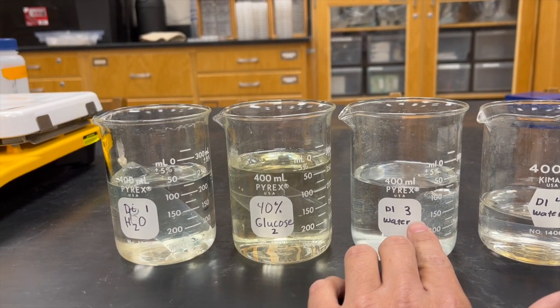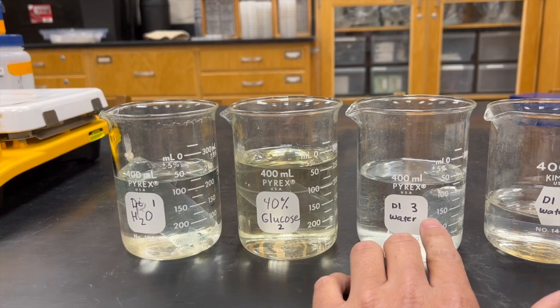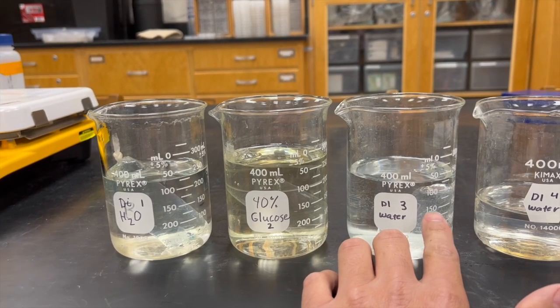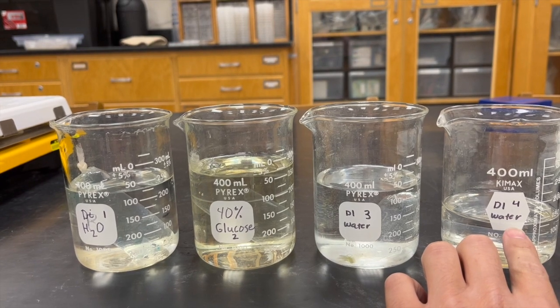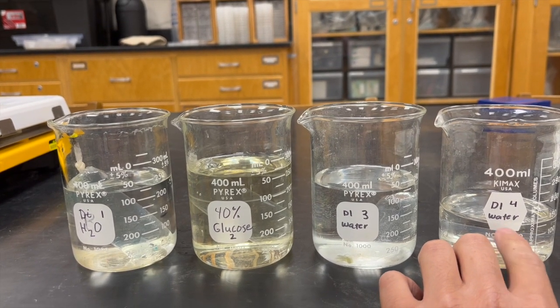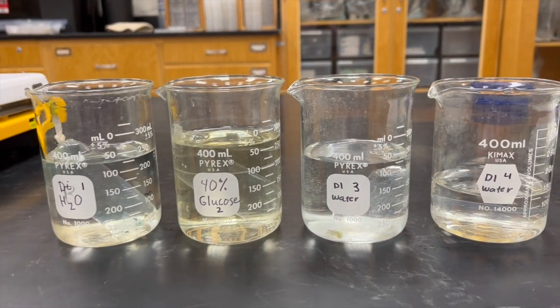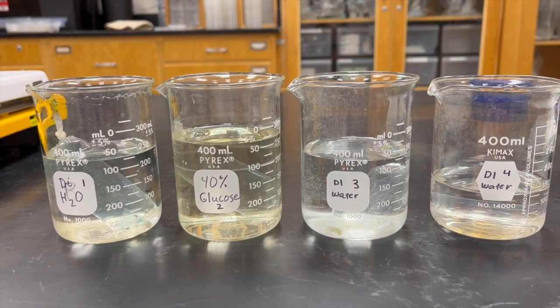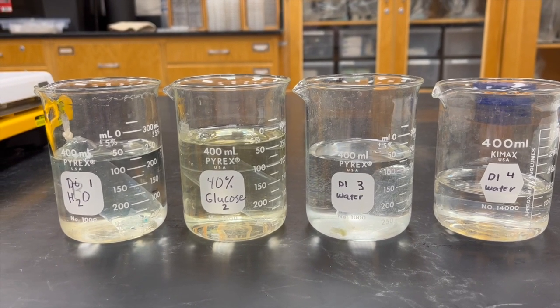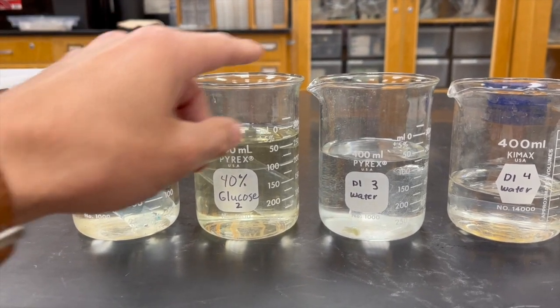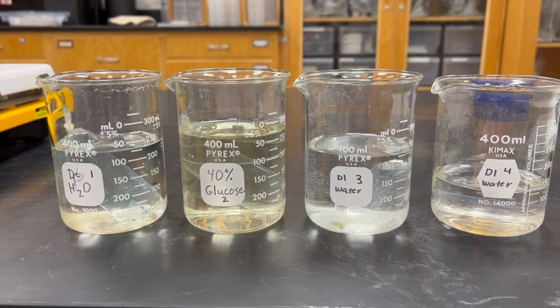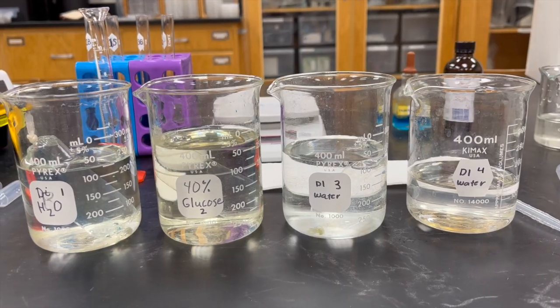For beaker three, we have a 10% salt solution within the dialysis bag. For beaker four, we have a 40% sucrose dialysis bag. You're going to let it sit there for an hour. Make sure to weigh the dialysis bag before putting it into each of their respective beakers.